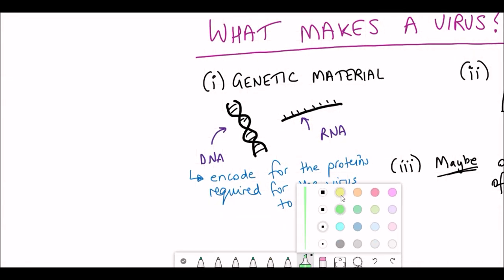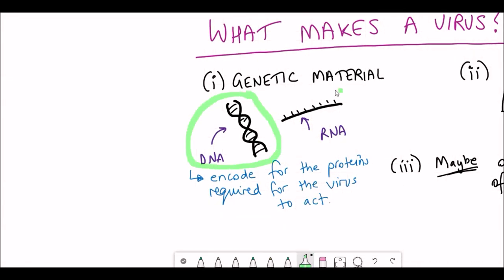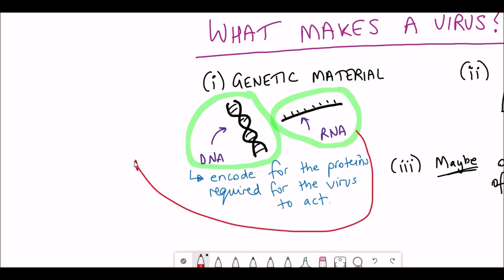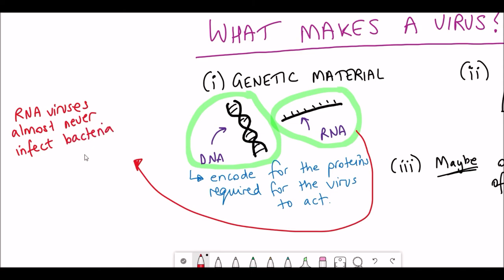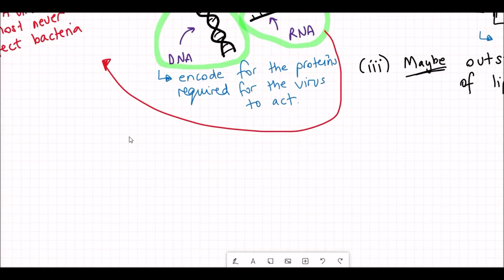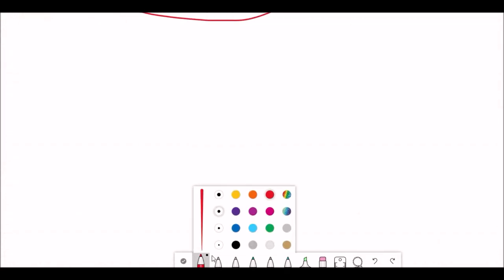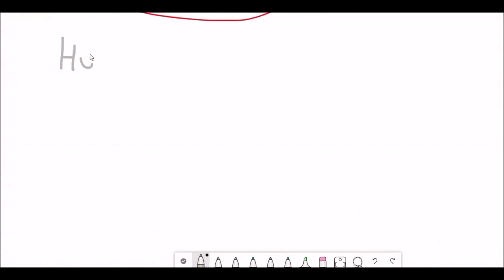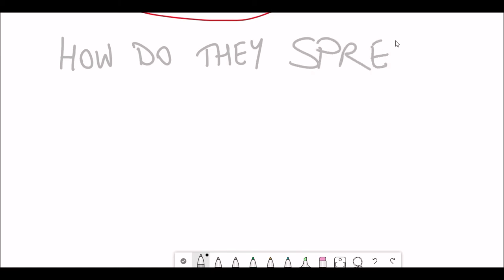The influenza virus is actually an example of an RNA virus. RNA viruses almost never infect bacteria, but they can infect humans and plants and other organisms.